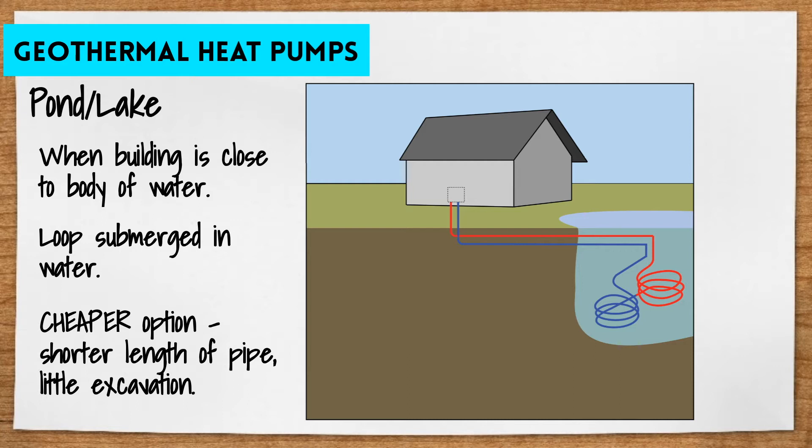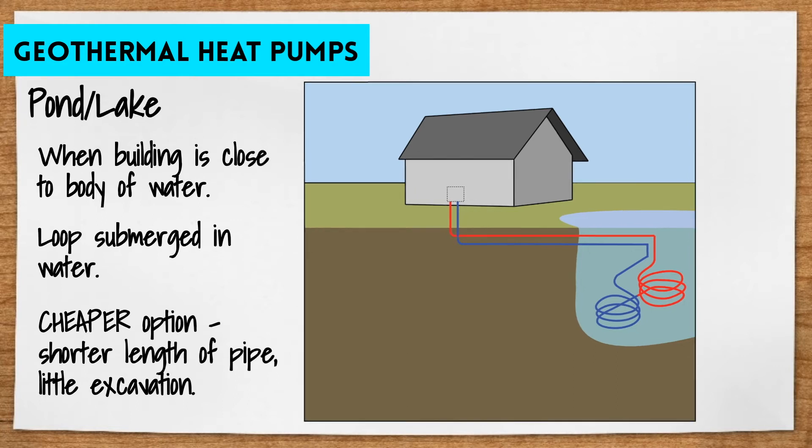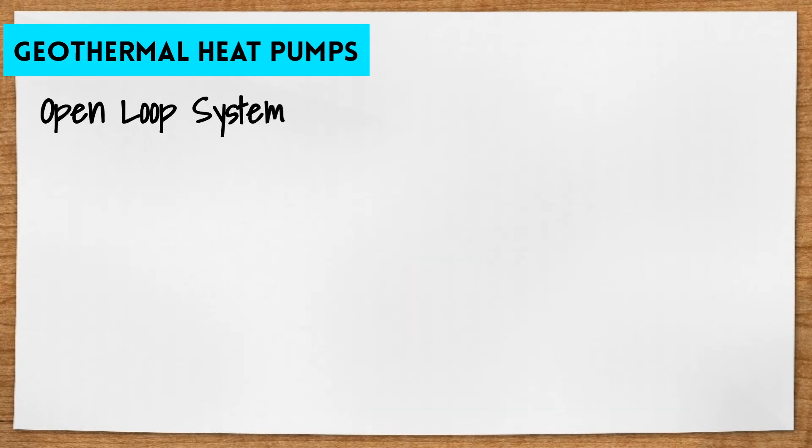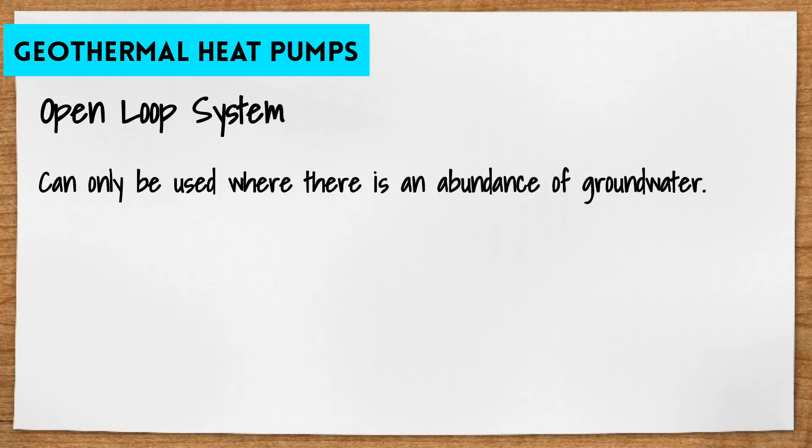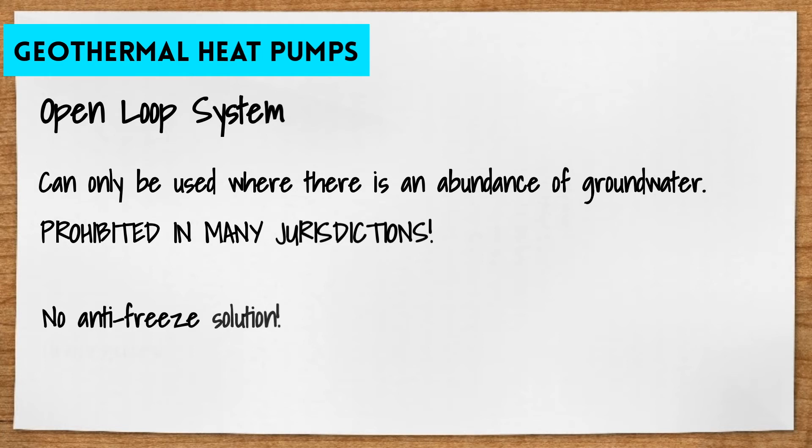The fourth option is an open loop system. This type of system can only be used where there's an abundance of groundwater and is often prohibited by many jurisdictions. The open loop system uses underground well water as the heat exchange fluid that circulates directly through the geothermal piping system.